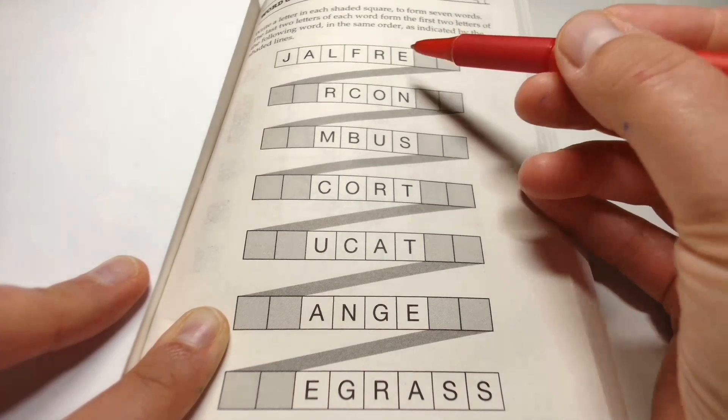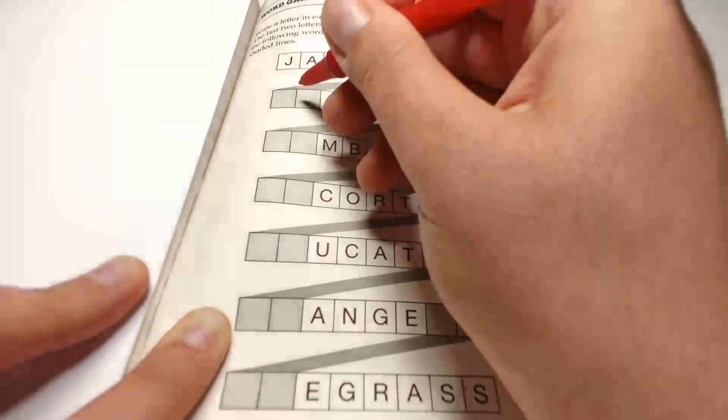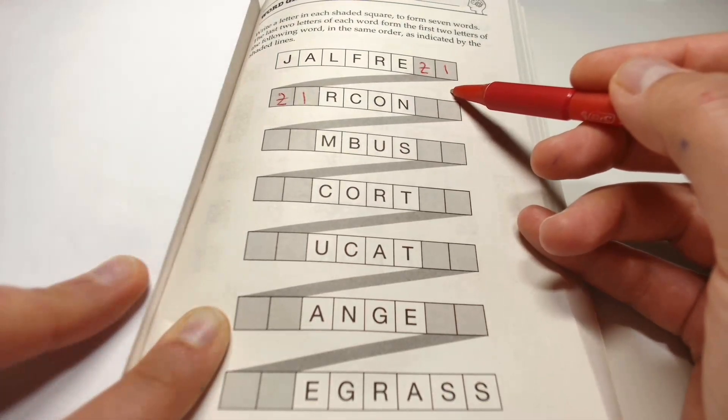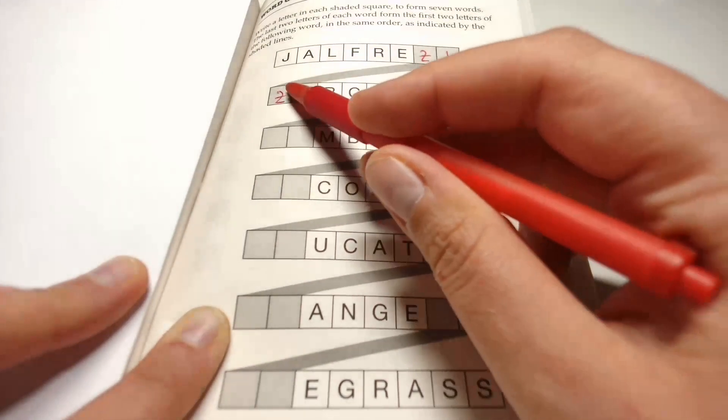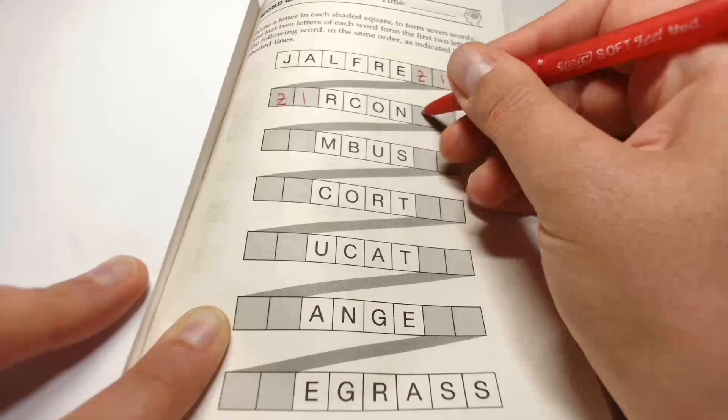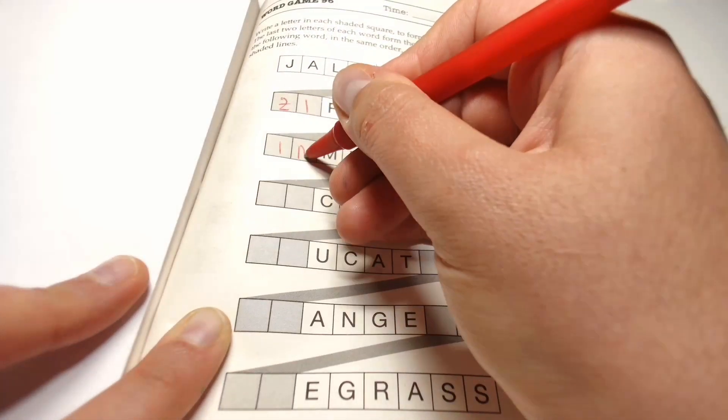The first one is jalfrezi. And because we finish with these two letters, we must start with the same two letters. Zirconia. And of course, we start with the same two.